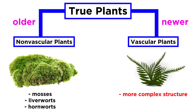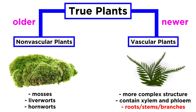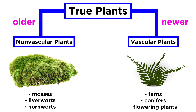On the other hand, the more complex and more recently evolved vascular plants have complex structures. Vascular plants have xylem and phloem, which facilitate the transport of water and nutrients through a plant's body, allowing it to grow very large. These vascular tissues also allow for more complex structures like roots, long stems, and branches. Examples of vascular plants include ferns, conifers, and flowering plants.